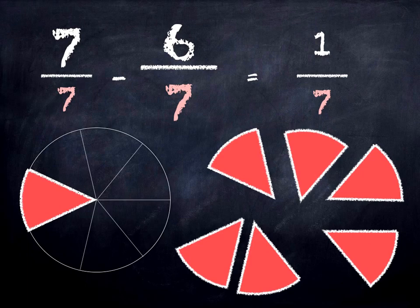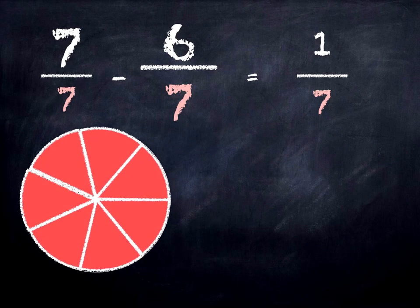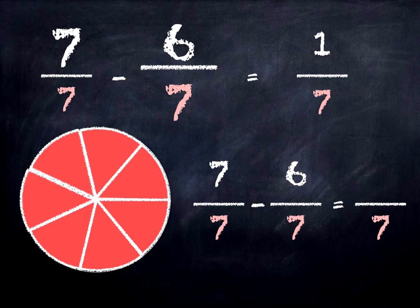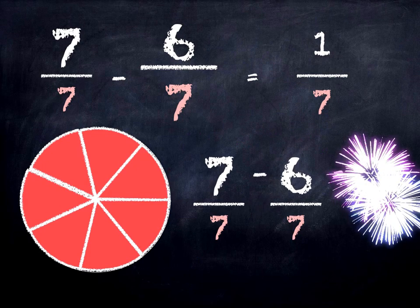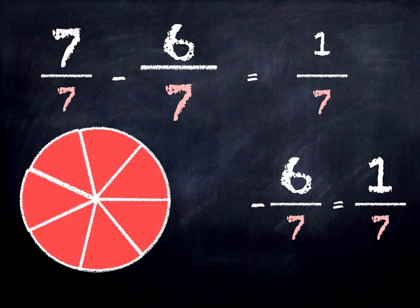7 sevenths take away 6 sevenths is 1 seventh. And the sum we actually do is 7 take away 6, because our denominators stay the same. And we know that 7 sevenths is the same as 1, so 1 take away 6 sevenths is 1 seventh.